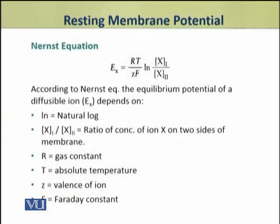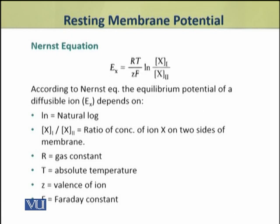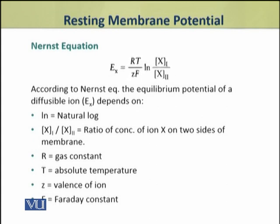First, we shall discuss the Nernst equation, which is used to calculate the effect of a single ion on the equilibrium potential of the membrane. According to the Nernst equation, the equilibrium potential of a diffusible ion X depends on the natural log of the ratio of the concentration of ion X on two sides of the membrane, that is, inside and outside the membrane.